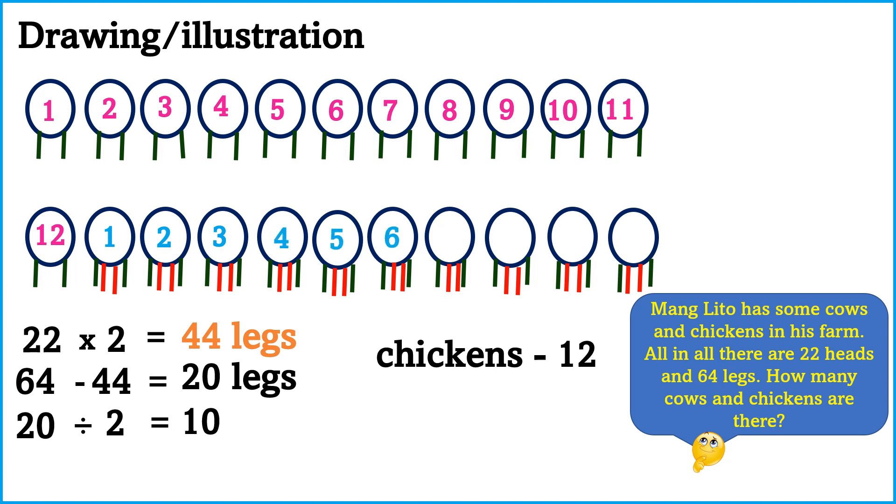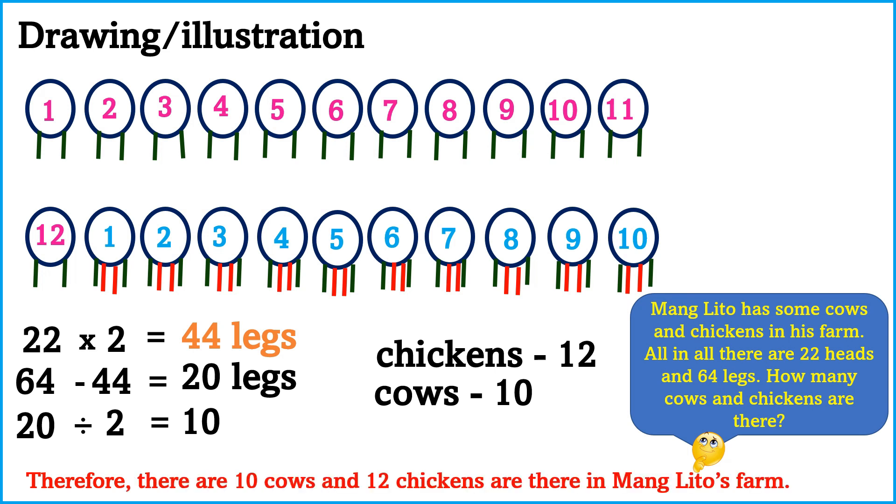Then let's count the heads having 4 legs. Therefore, there are 10 cows and 12 chickens in Mang Lito's farm.